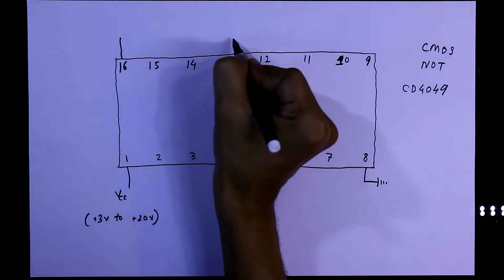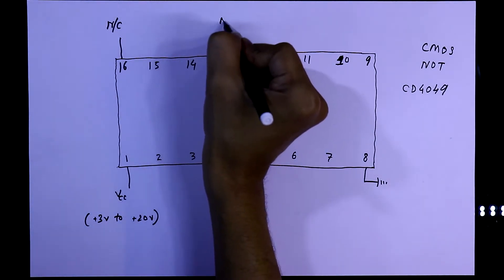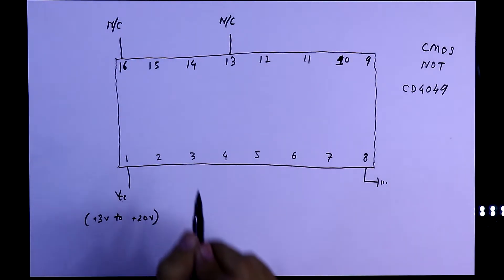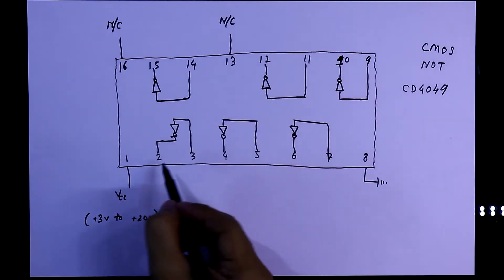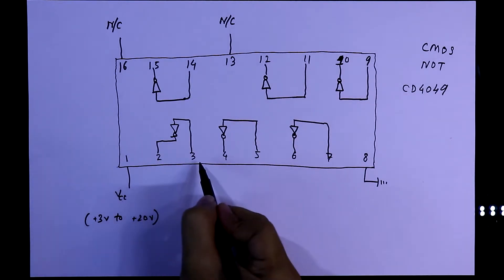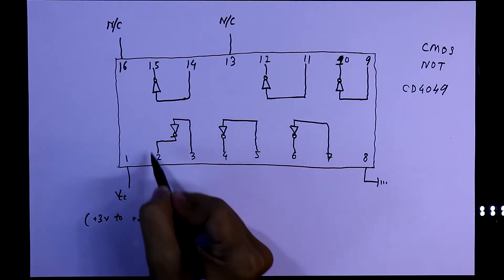Pin 16 and pin 13 are no connection pins. They are useless. It has 6 NOT gates. Pin 2 is output and pin 3 is input. So the gate will work from this way.